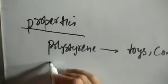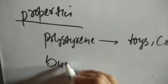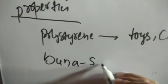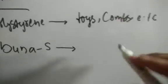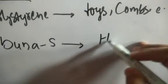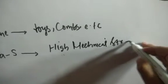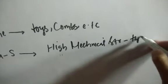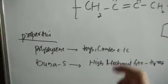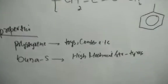Now if polystyrene is mixed with butadiene, it forms the butadiene-styrene polymer. This polymer is mechanically very hard — it has a high mechanical strength. So this can be used for making automobile tires, for example.